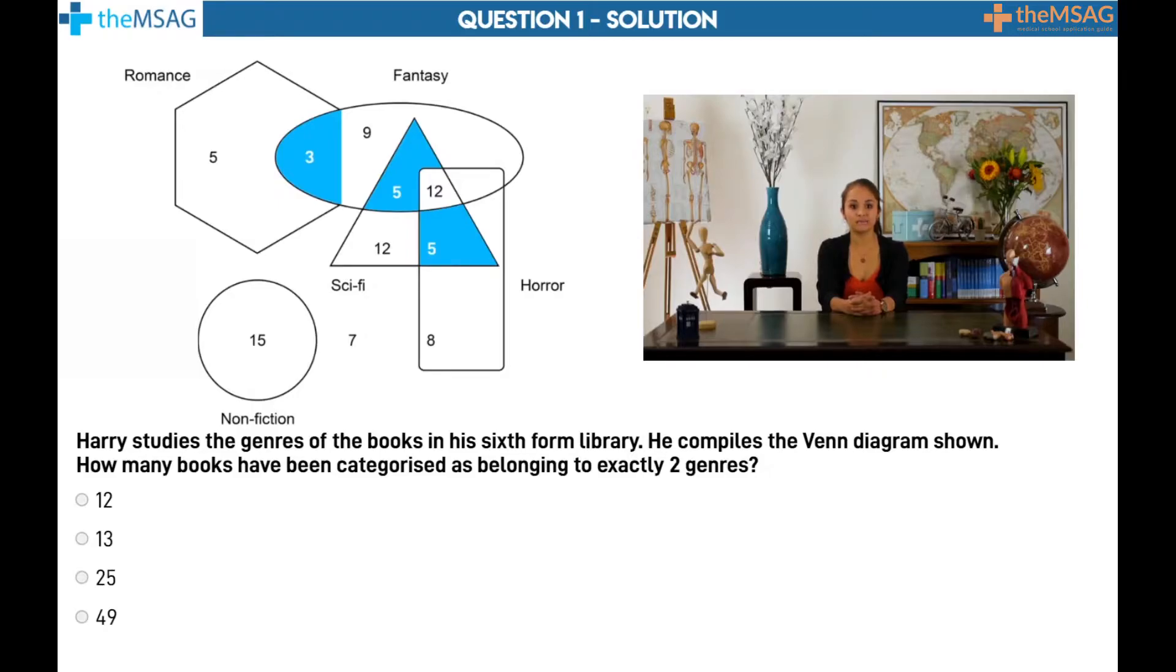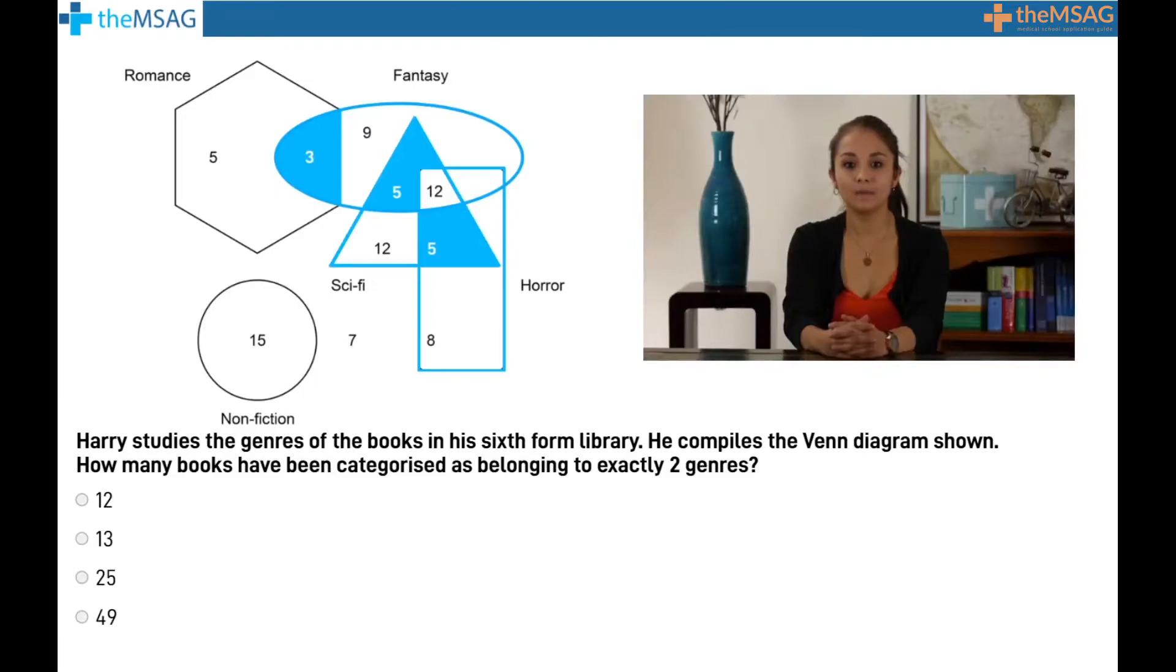When you see more than two shapes, so in our example where sci-fi, horror and fantasy overlap, be extra vigilant and focus on this area in particular. I advise taking a moment to look at this area and separate the overlapping values accordingly in your mind. So for example, five books are both sci-fi and horror, five are sci-fi and fantasy and twelve are sci-fi, fantasy and horror. This reduces the risk of making a careless mistake and falling into the trap.